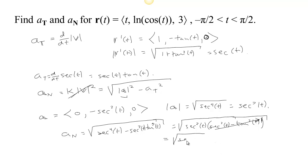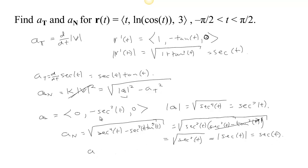So we have the square root of sec² t, which, since we're in a range where secant is positive, equals sec t. Therefore, a_T equals sec t tan t and a_N, the component of acceleration in the normal direction, equals sec t.